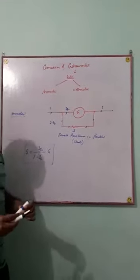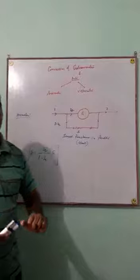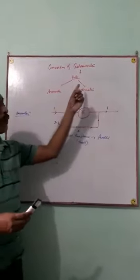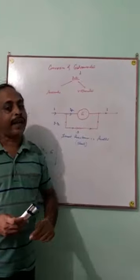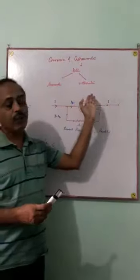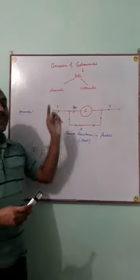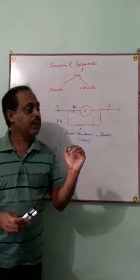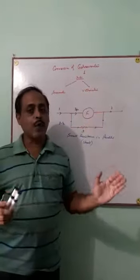Dear students, in this class we are going to discuss the conversion of a galvanometer into an ammeter and then into a voltmeter. An ammeter measures the electric current through a circuit, whereas a voltmeter measures the potential difference across the source of EMF or across the load.